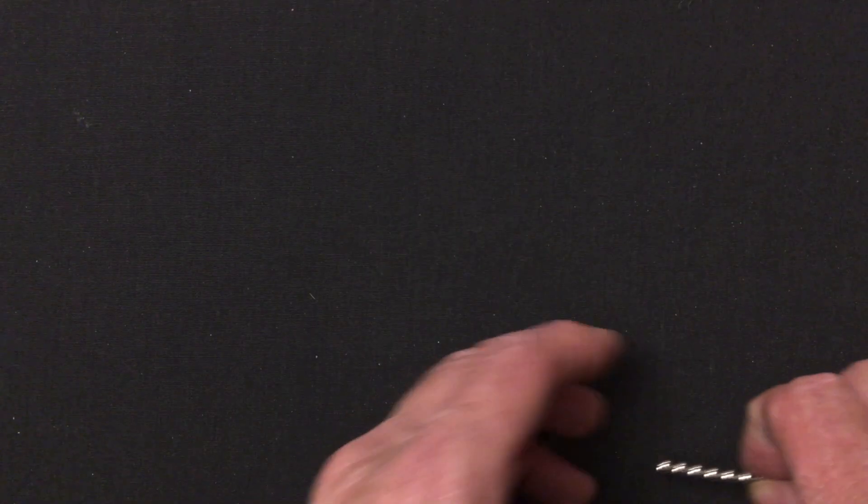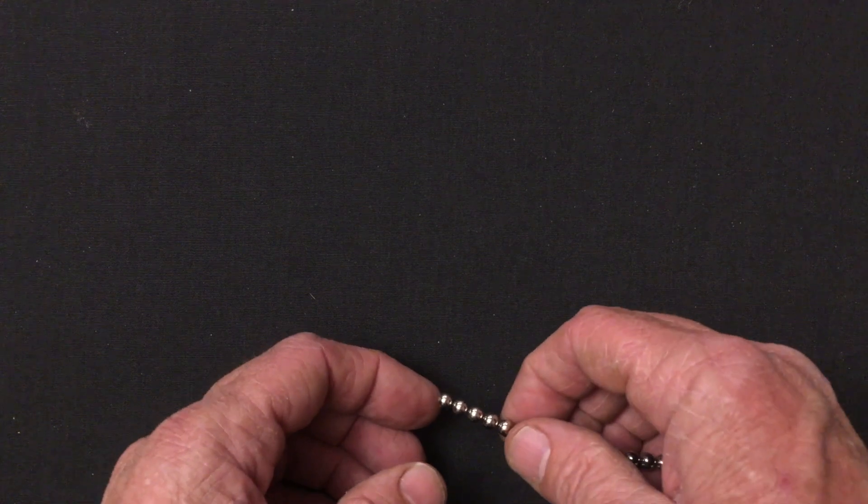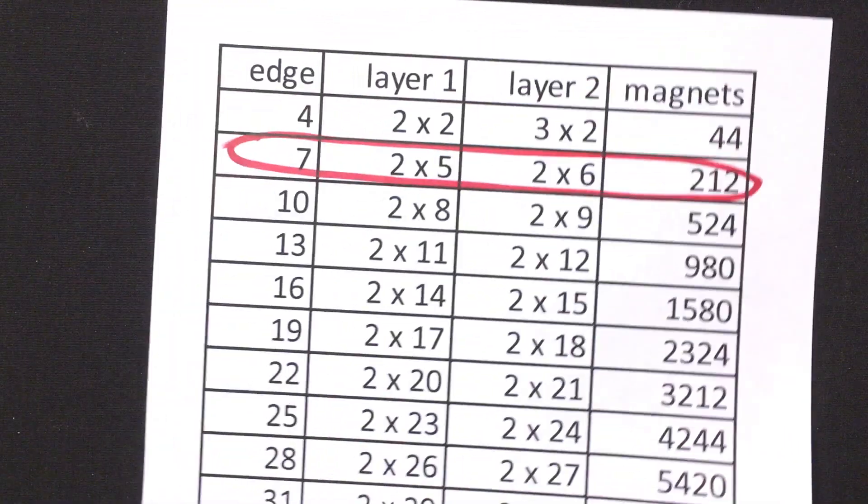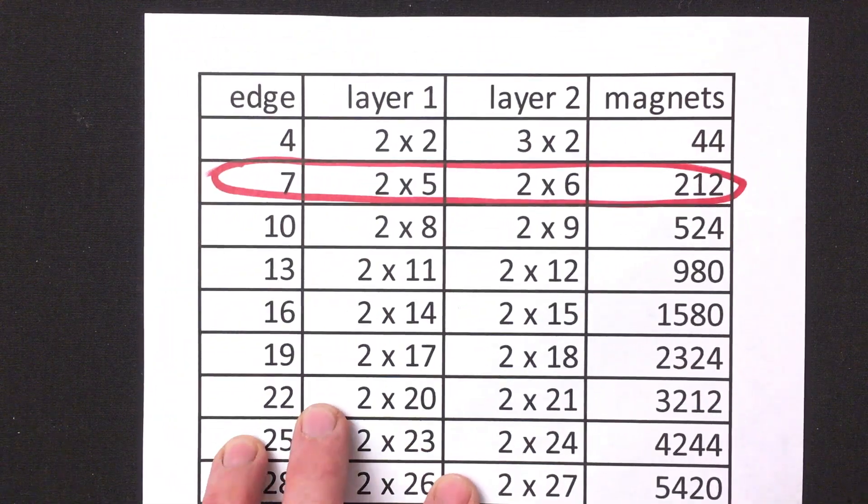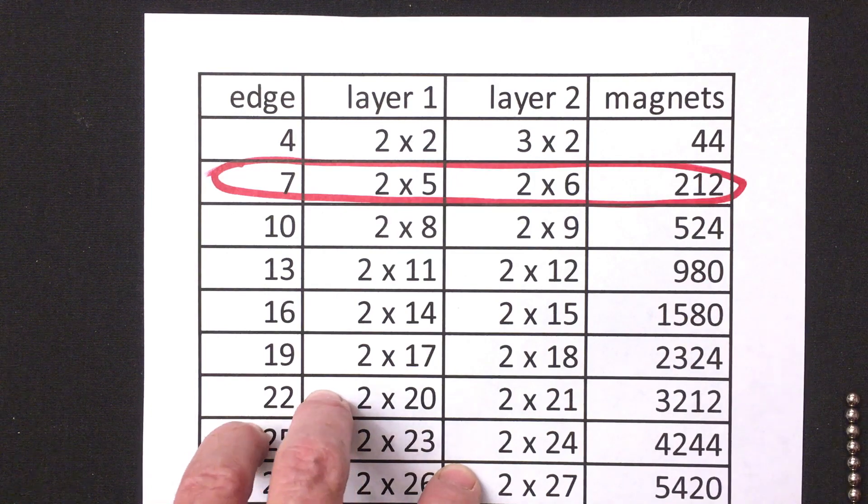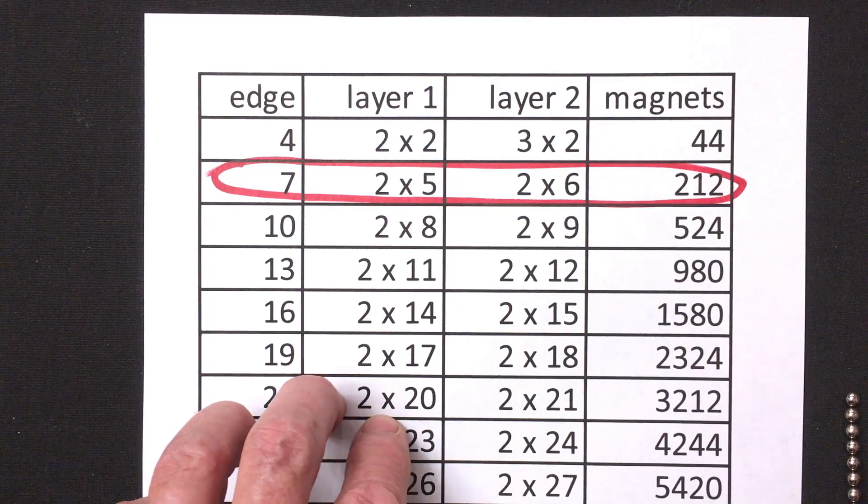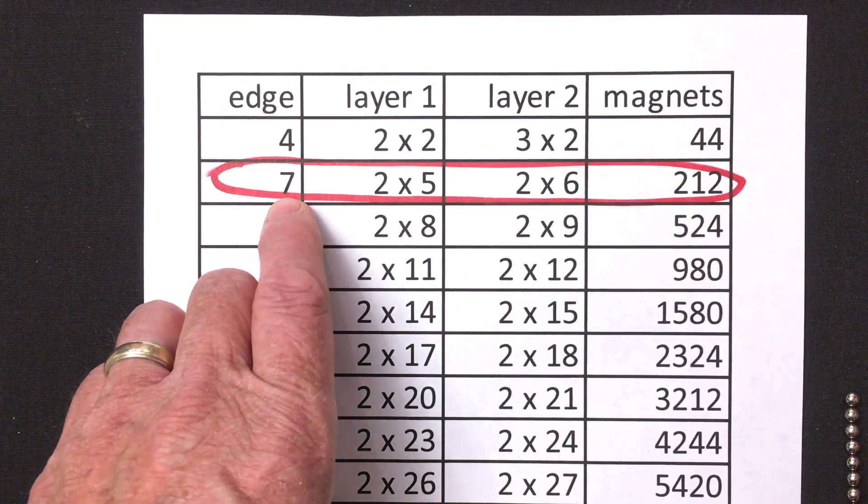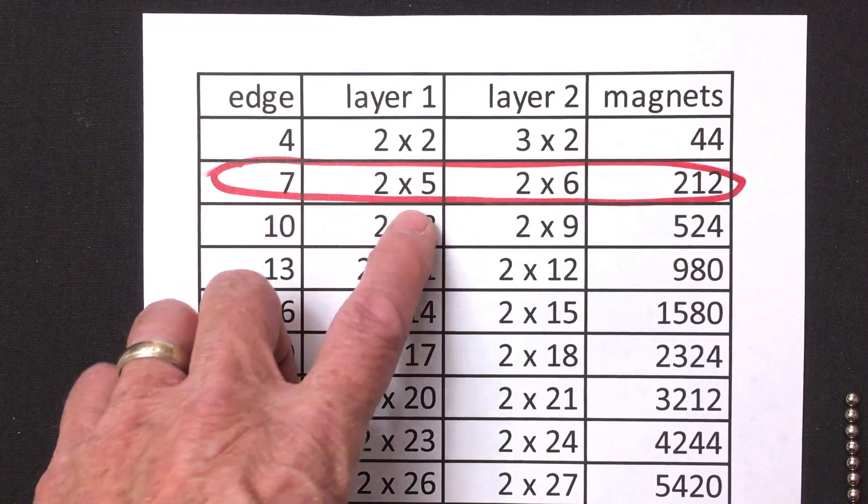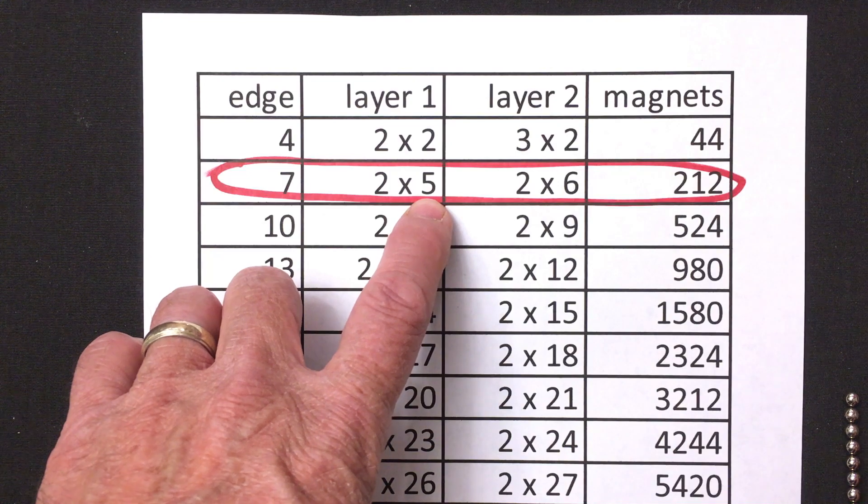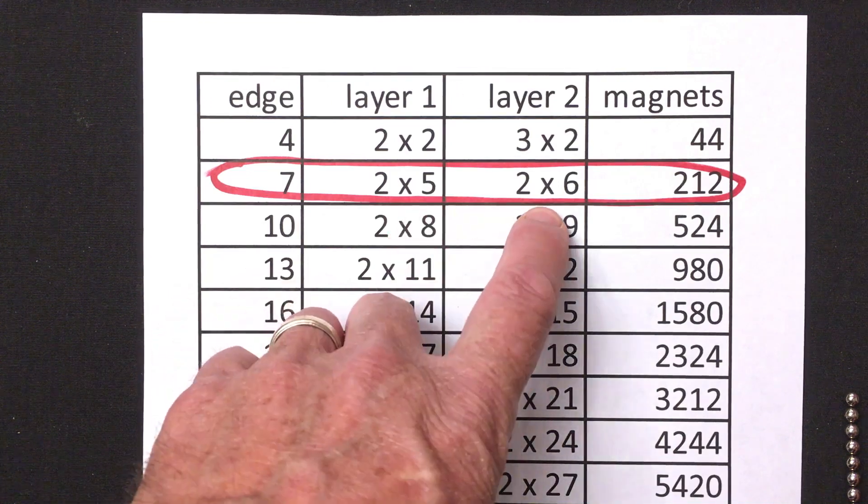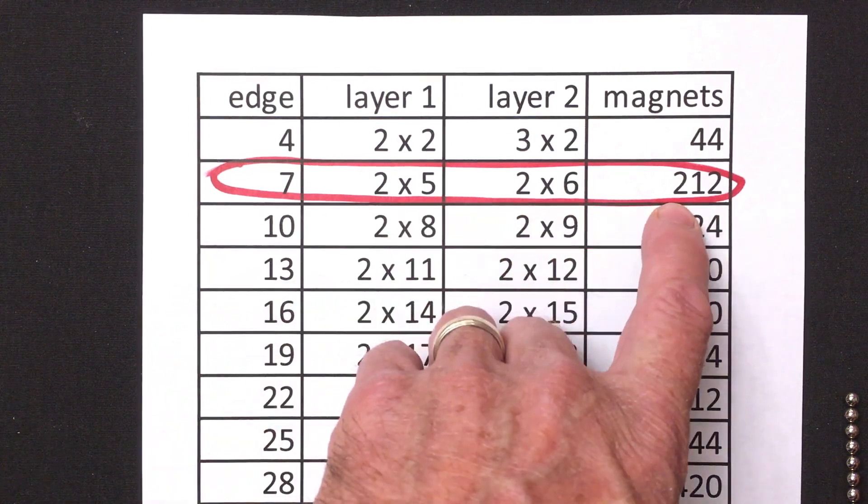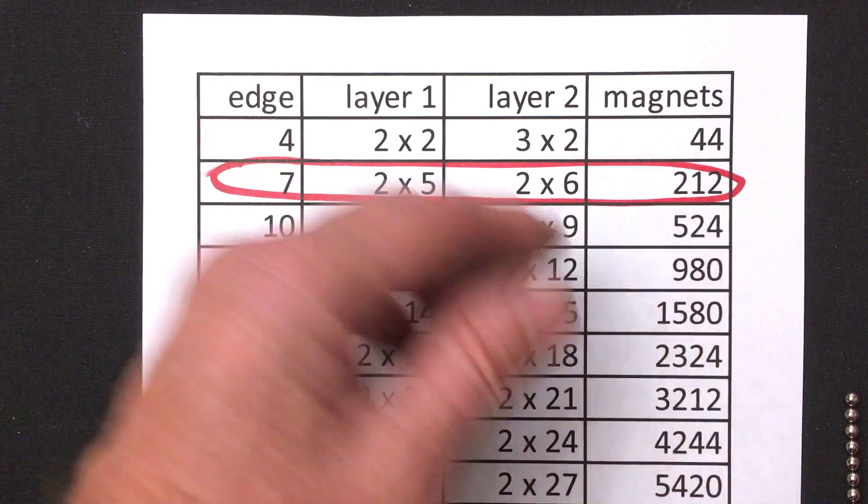To build the hollow octahedron with edge count seven we consult this table. A copy of this table is included in the written description and this is the one that we want to build. It has edge count seven. We'll need a two by five layer, I'll explain what that means, and a two by six layer and the total thing requires 212 magnets.